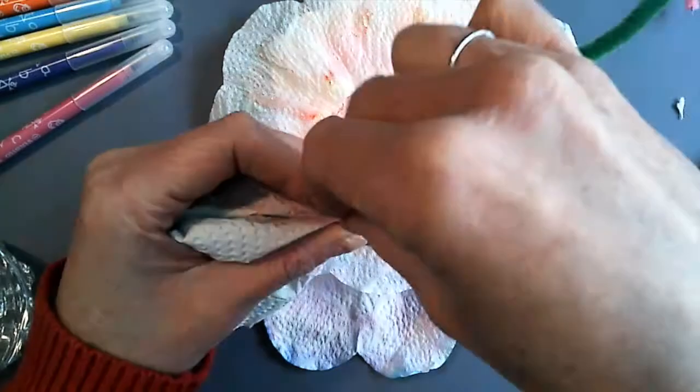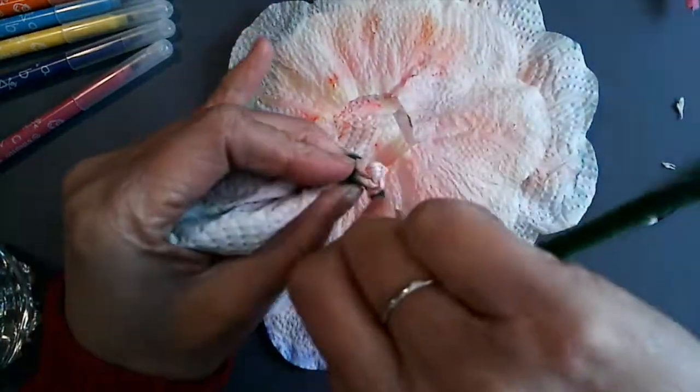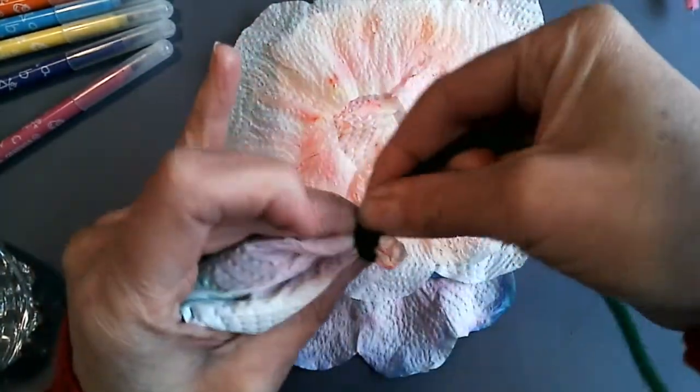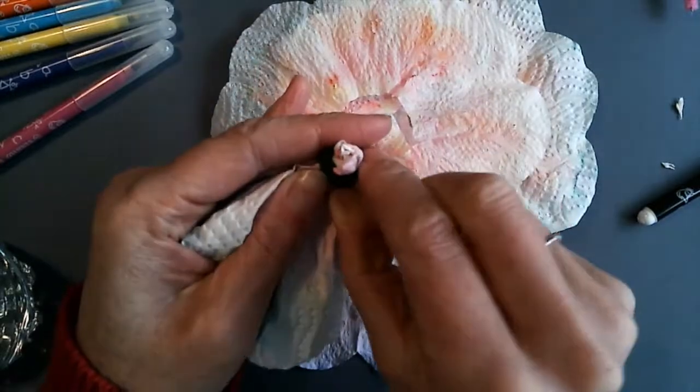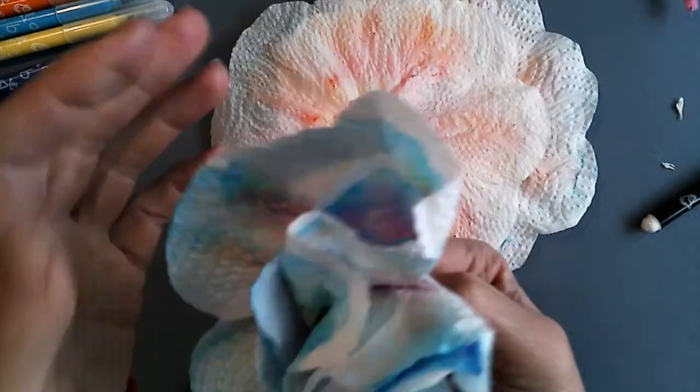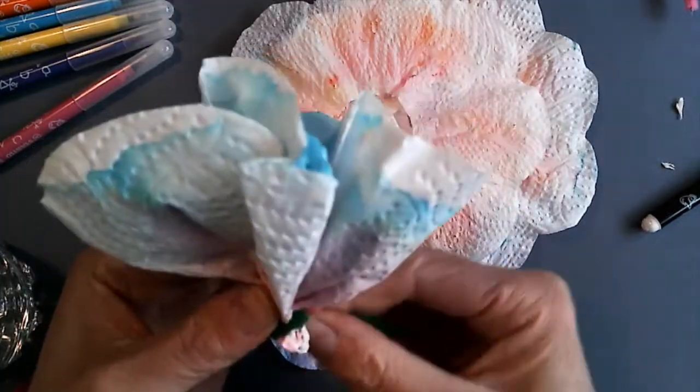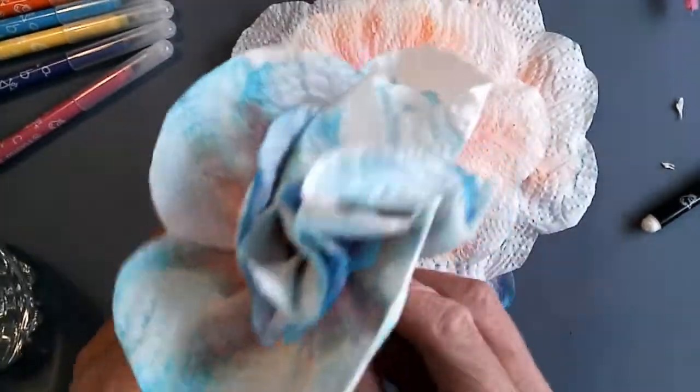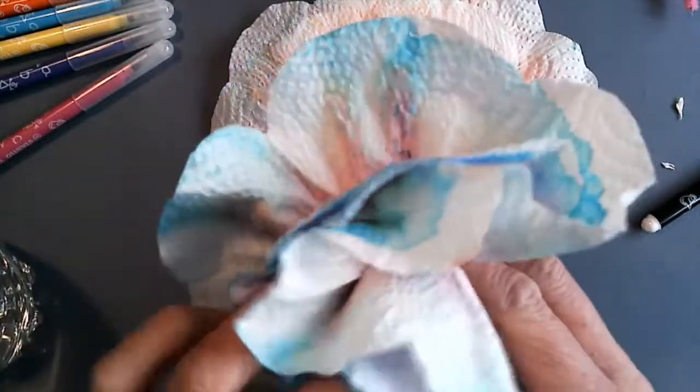Take the pipe cleaner and wrap one side around. Get an adult to help you with this. Make sure it's really tight, and if it keeps coming off, you can also secure it with glue or tape. Once it's secure, you can open up the flower to reveal all of the colors.